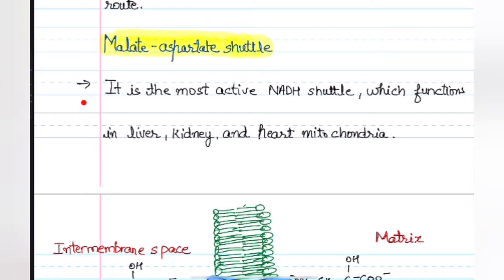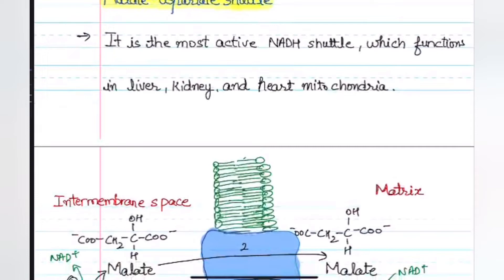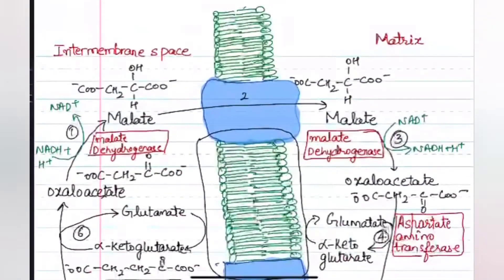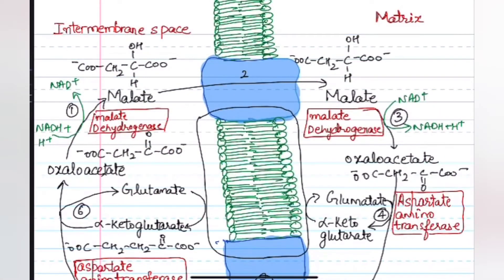To begin with the malate-aspartate shuttle: oxaloacetate, which is already present in the cytosol, helps in the conversion of oxaloacetate to malate. The NADH, which is carrying the electrons and wants to transfer them from the cytosol to mitochondria, drives this conversion. Oxaloacetate converts to malate, and NADH converts to NAD+ with the help of the cytosolic malate dehydrogenase enzyme.